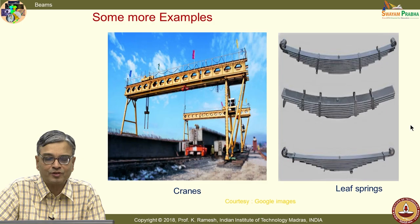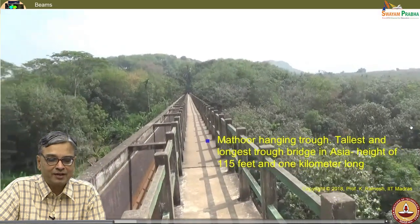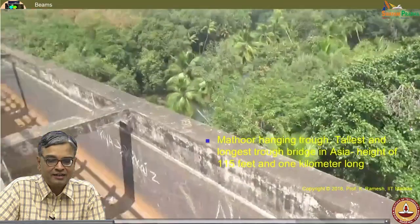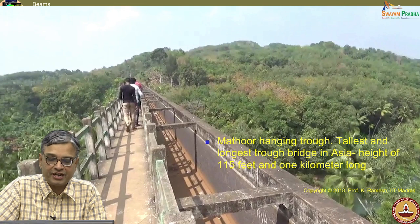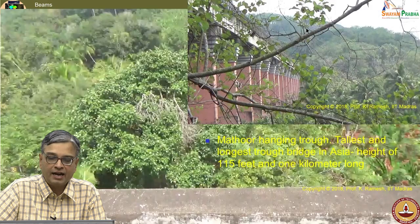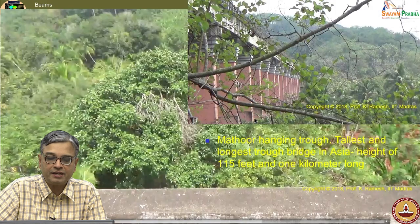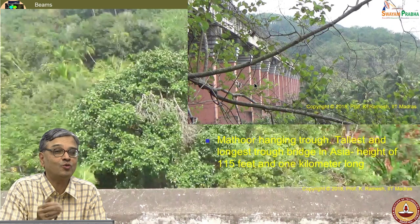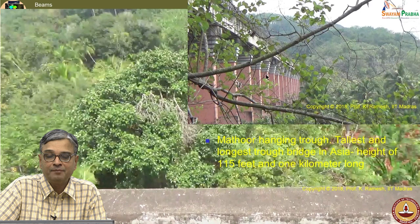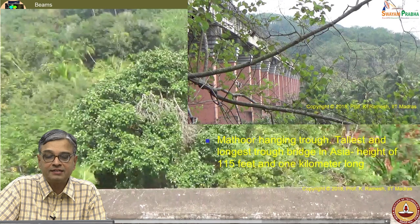Moving on to some fun facts: Romans were good at building aqueducts. We recently visited the Mathur hanging trough — the longest trough bridge in Asia at a height of 115 feet. The side view shows very tall columns supporting the bridge, which is essentially an aqueduct. This is a beam of 115 feet long.